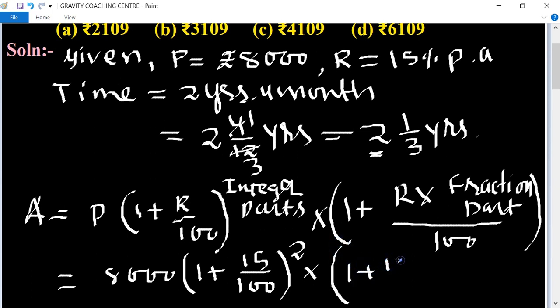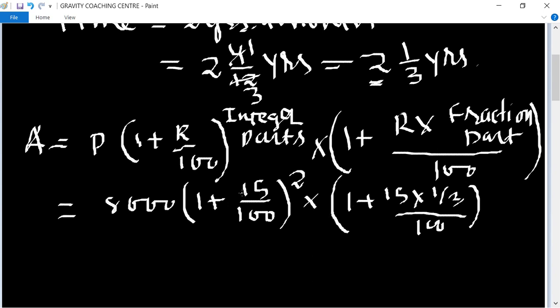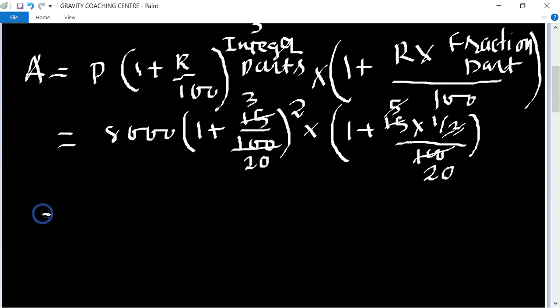1 + 15 × 1/3 / 100. Now cancel by table of 5: 5 threes and 5 twenties. After LCM it will become (23/20)² multiplied...